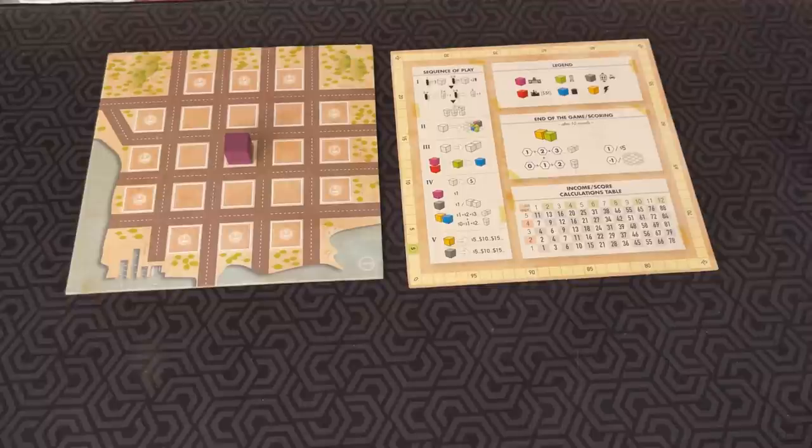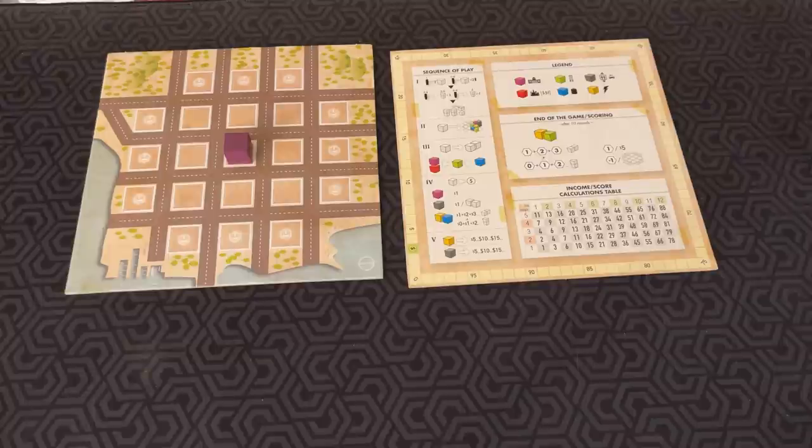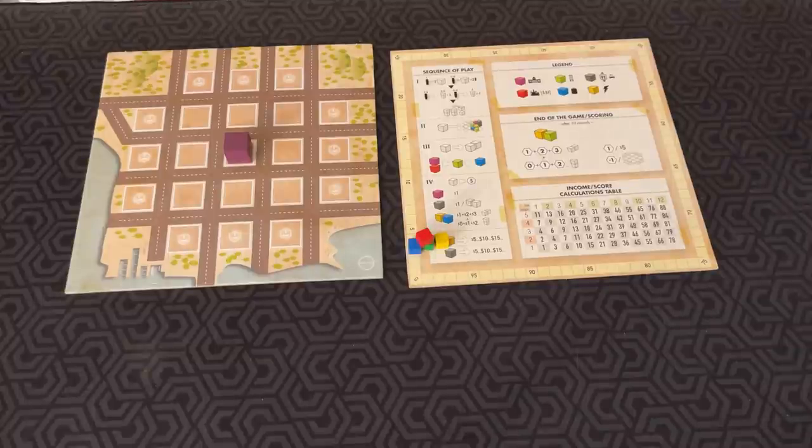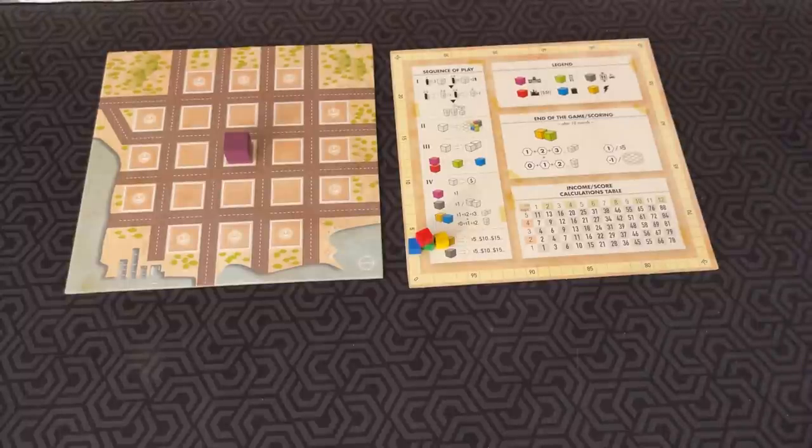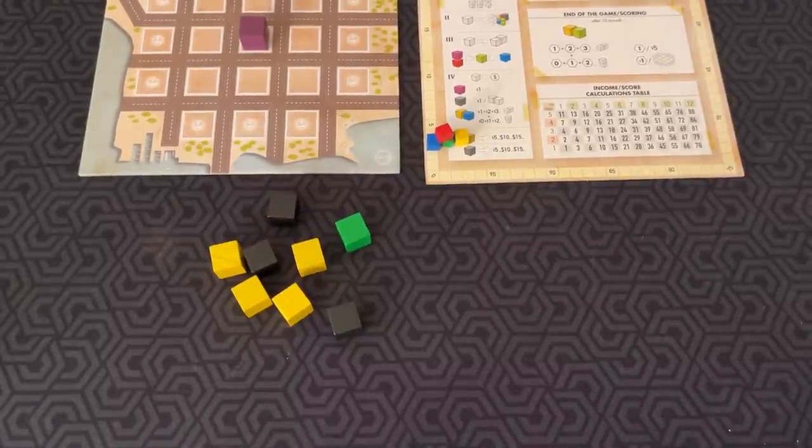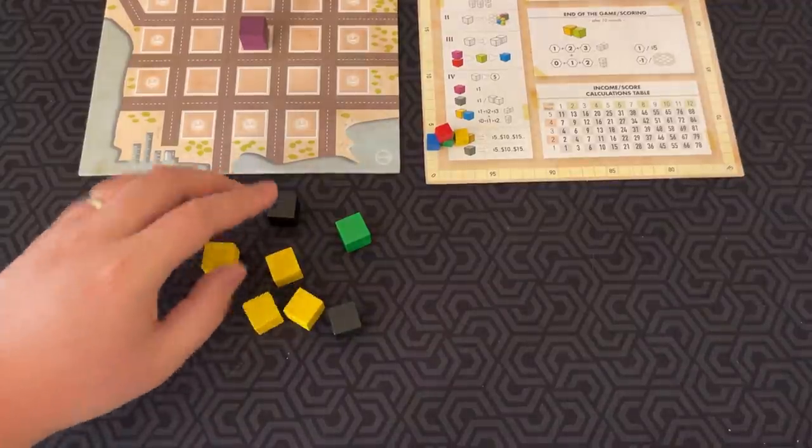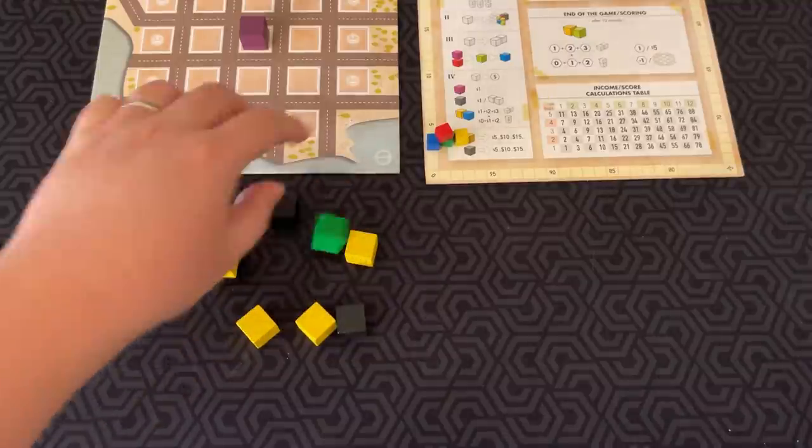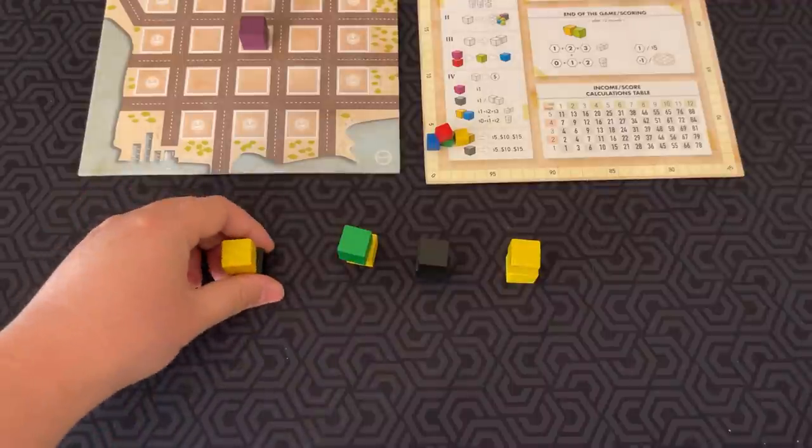Let me show you how to play. In Town Center, you are all trying to create the town with the highest population and the most cash reserves at the end of the game. In the first phase, we have investment, where a player draws a number of cubes from this bag equal to twice the number of players. In a four-player game, that would be eight. And then, they have to make a number of towers as the same number of players, each tower consisting of two cubes.